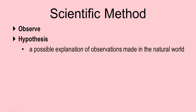That's a simple observation, but it doesn't stop there. The second step in the scientific method is we make a hypothesis. A hypothesis is a possible explanation of observations that we make in the natural world. Sometimes it's called an educated guess. A hypothesis in our situation where the car doesn't start might be something as simple as saying, perhaps there's something wrong with the battery. That's just a possible explanation.